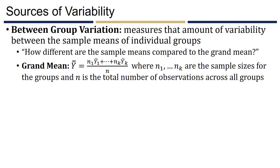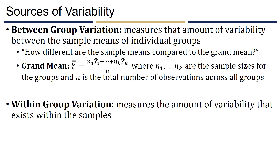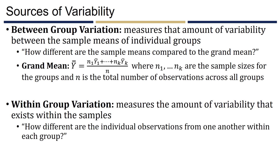The other source of variability is within-group variation, which measures the amount of variability that exists within the individual samples themselves — specifically, how different the individual observations are from one another within each of our individual groups.